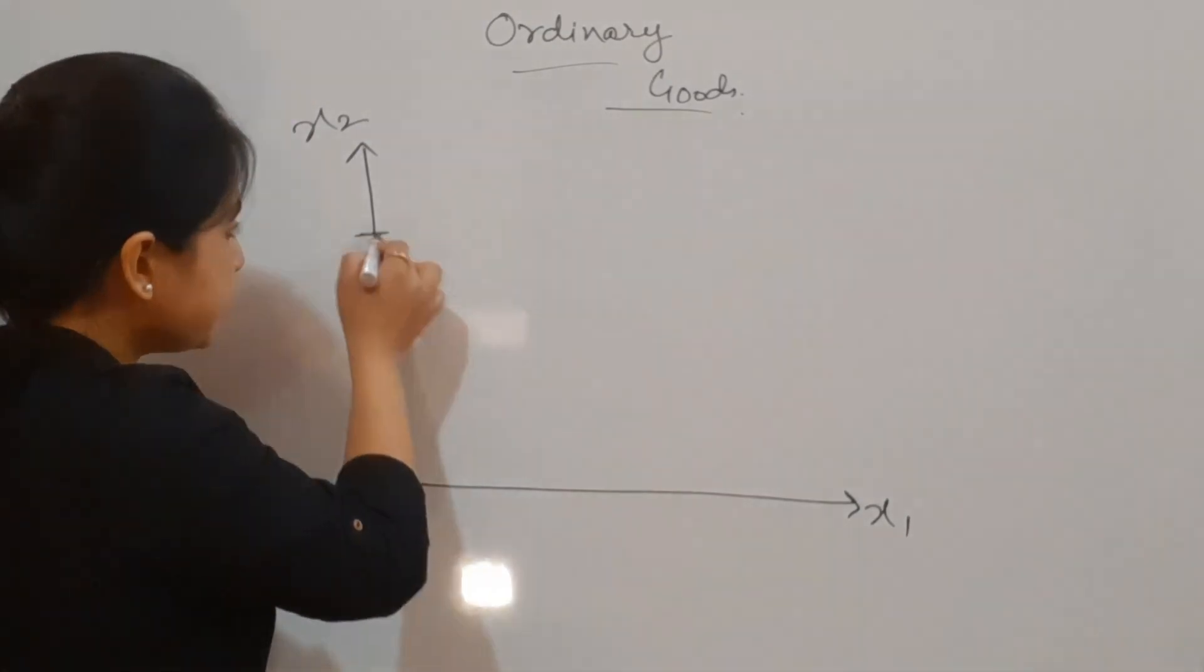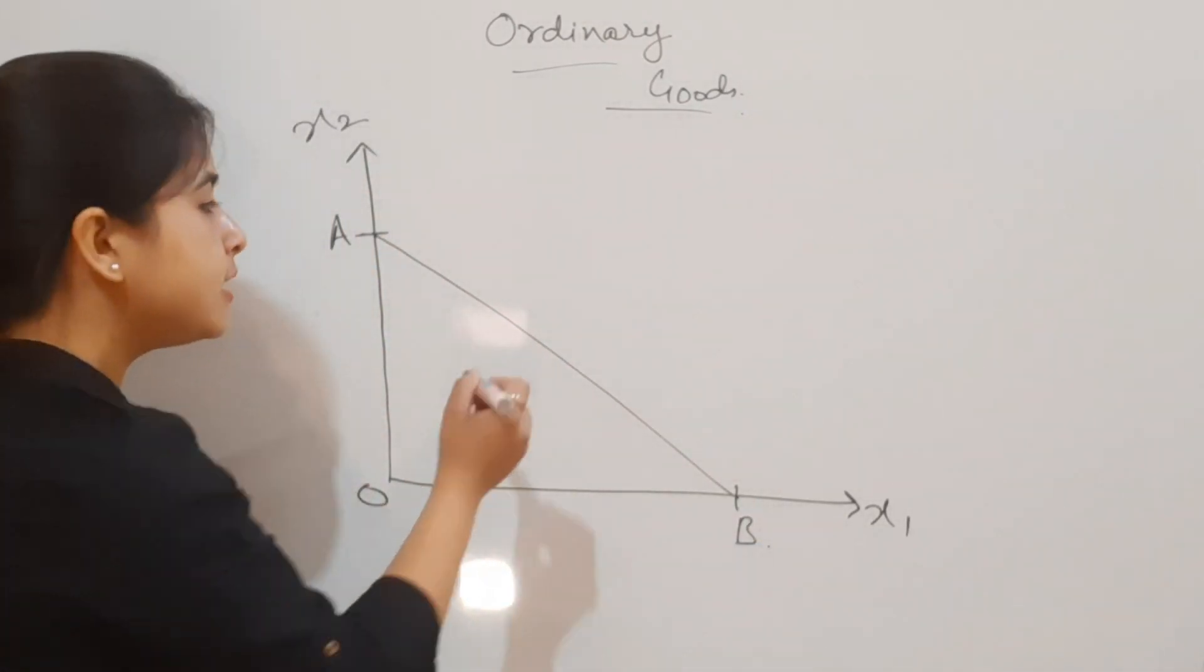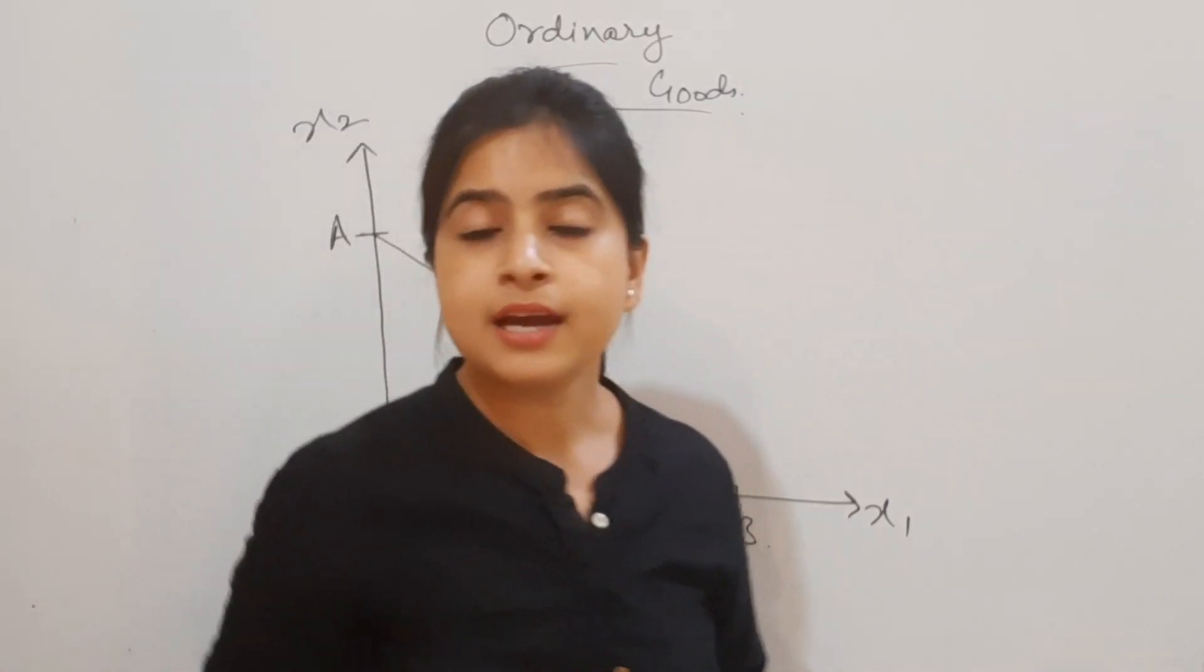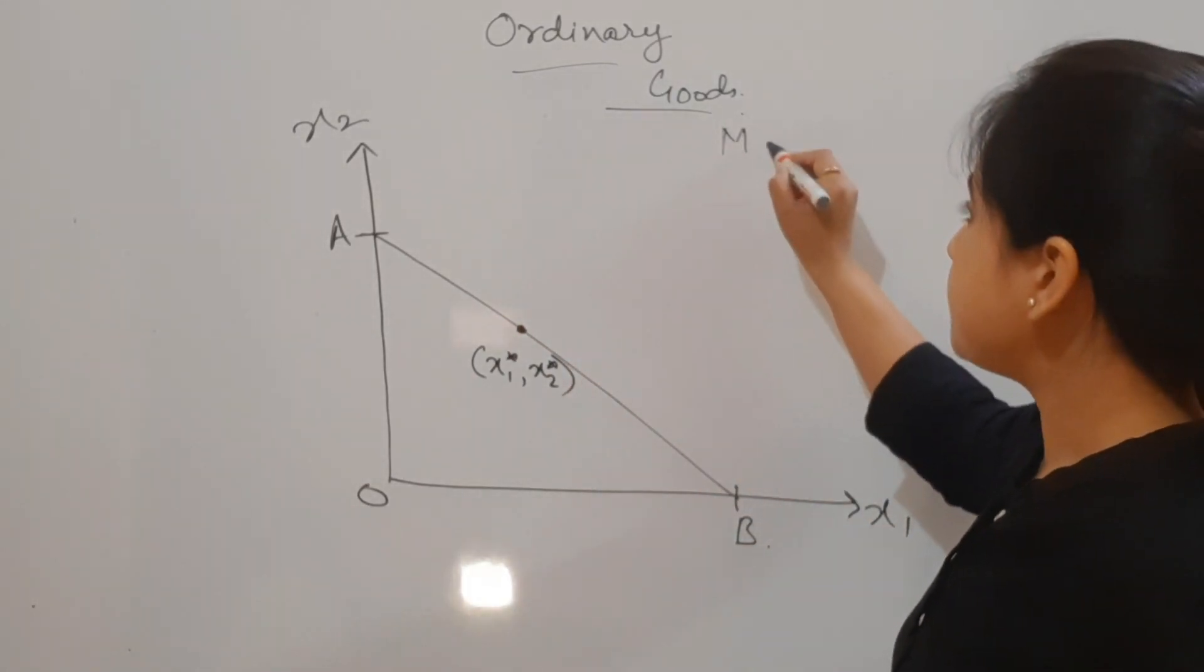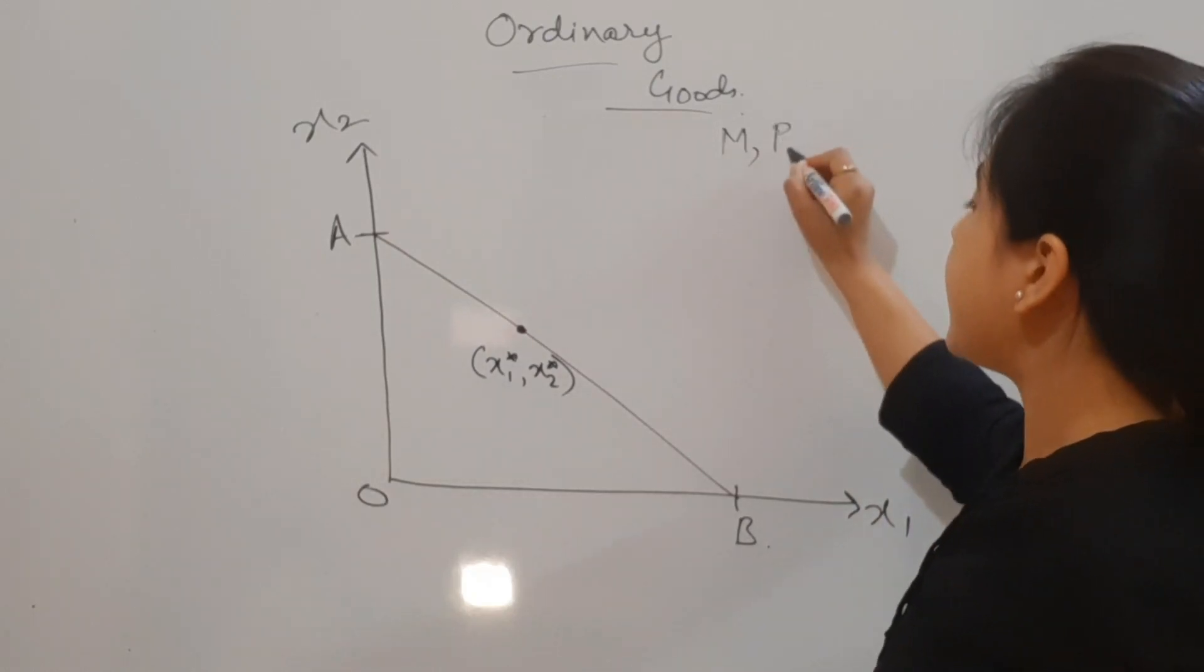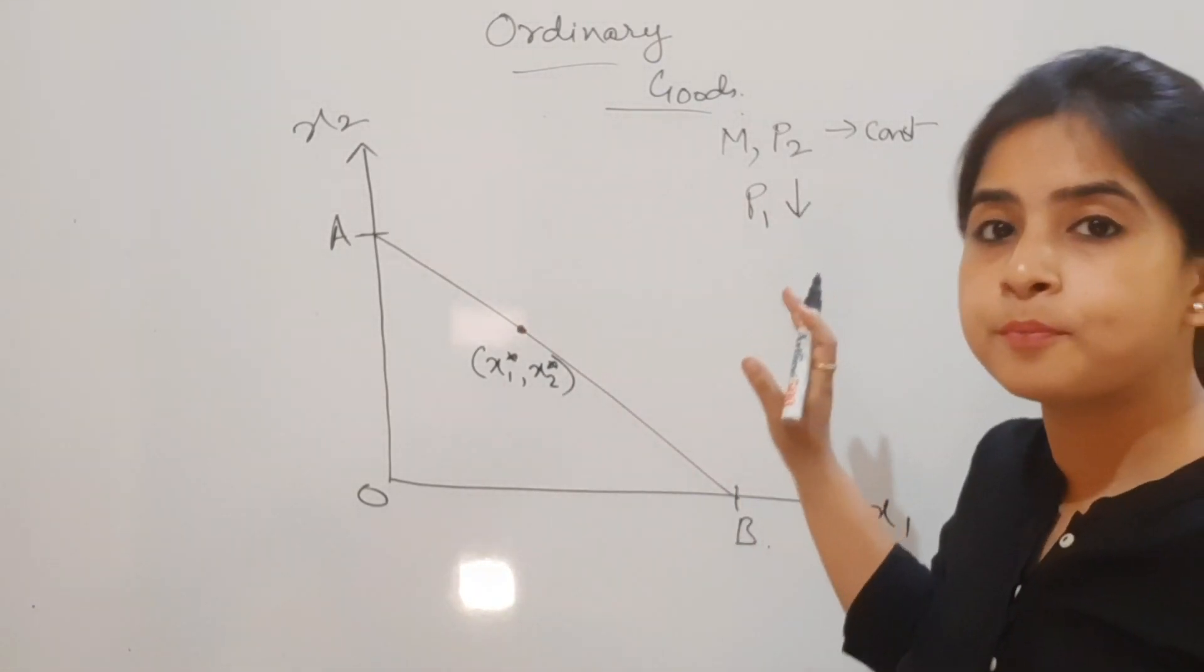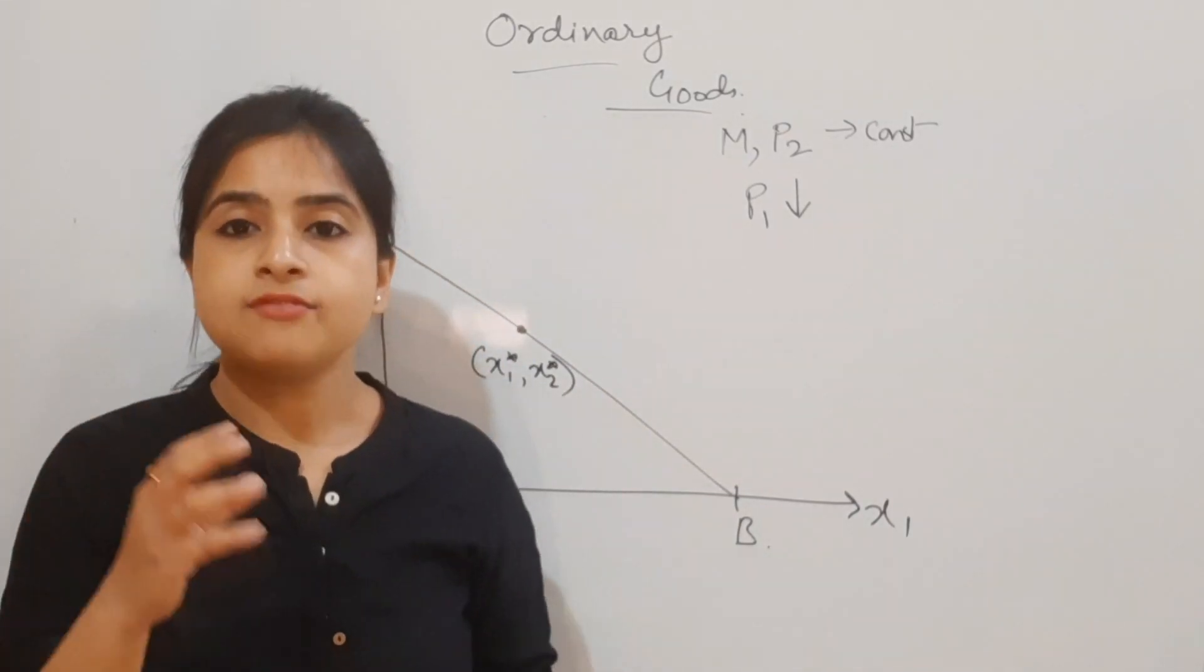Let me consider this as the initial budget line, marked as A and B. The consumption is taking place here at the optimal level: x1 star and x2 star. Now let's take a situation where m remains constant.